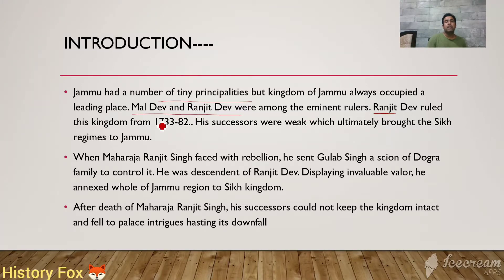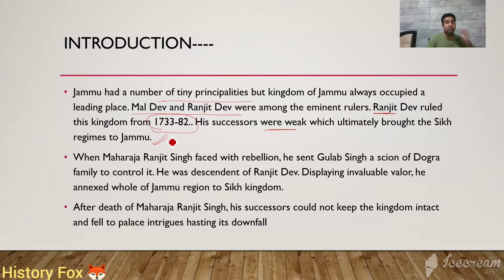Ranjit Dev ruled the kingdom from 1733 to 1782. His successors were weak, which ultimately brought the Sikh regime to Jammu. It was Ranjit Singh who captured Jammu. When Maharaja Ranjit Singh faced rebellion, he sent Gulab Singh, a descendant of the Dogra family, to control it.